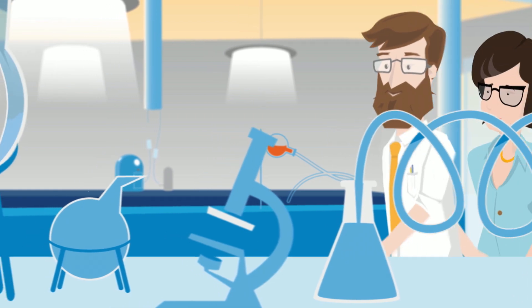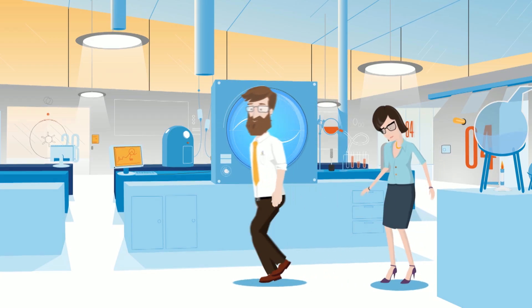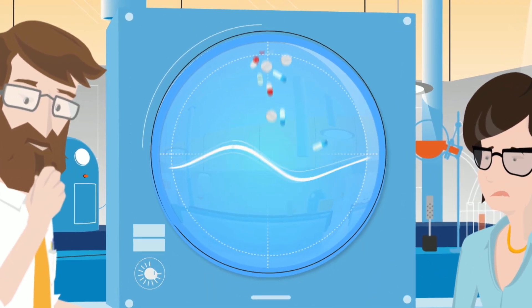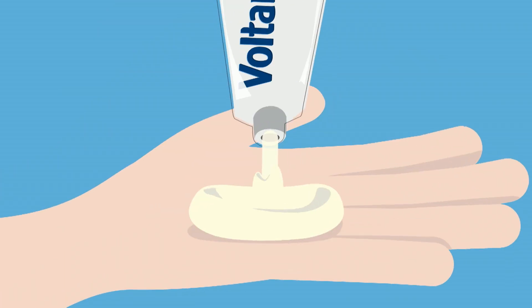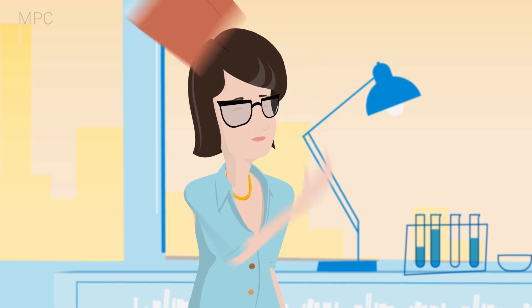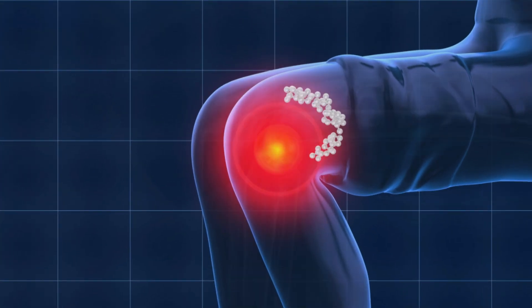We've just finished a series of films for a company called Novartis — they are a pharmaceutical company. We were asked to make a series of 2D character animations for them to talk about how their product works and what it does, but with a kind of humorous side to it. It's six films featuring two characters who are a bit clumsy and get into a lot of trouble, but also at the same time illustrate how this stuff works.